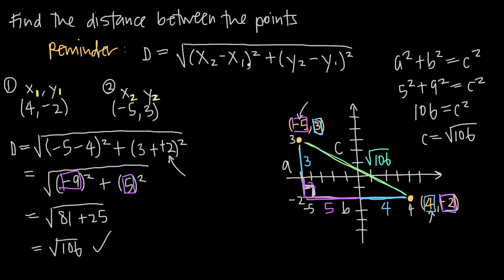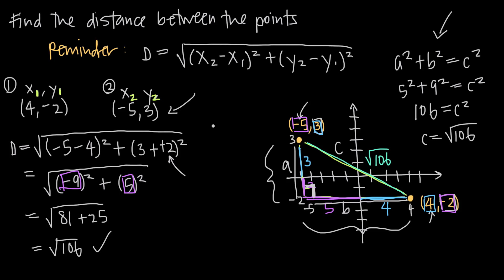Remember, you can always use the distance formula directly, but if you forget it, you can draw your axes, plot the two coordinate points, connect them with a diagonal line, and then draw a right triangle with a vertical and horizontal side to form the right angle. Label the sides a, b, and c — making sure c is the hypotenuse — then use the Pythagorean theorem to solve for c. That's how you use the distance formula to find the distance between two coordinate points.